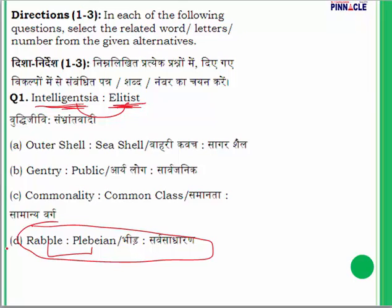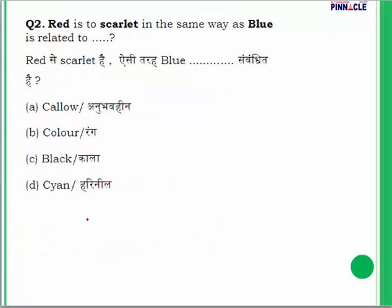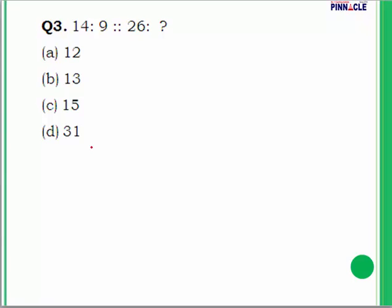Question 1 answer is option D. In question 2, 'red' is to 'scarlet' — both are synonyms. In the same way, the synonym for 'blue' is 'cyan'. So cyan is the answer for question 2.